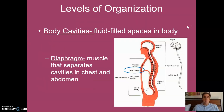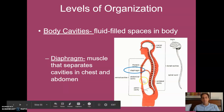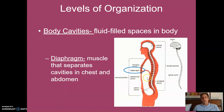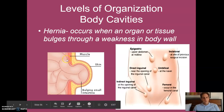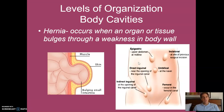One final point about how the body is organized: you have body cavities, spaces where organs are suspended. For example, the brain sits in the cranial cavity, the spinal cord below it, and you have a chest cavity and abdominal cavity separated by the diaphragm. The reason I point these out is to introduce what a hernia is — when an organ or tissue bulges through a weakness in the body wall. We'll talk more about that in the next screencast.